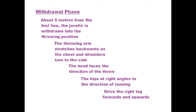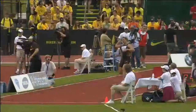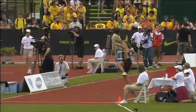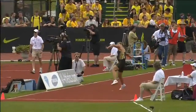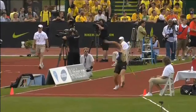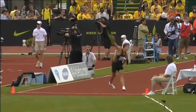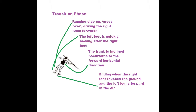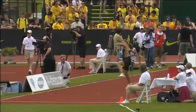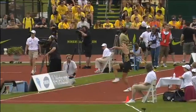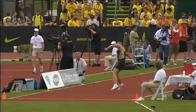Withdrawal phase: about 5 metres from the foul line, the javelin is withdrawn into the throwing position. Transition phase: running side on, crossover, driving the right knee forwards, with the left foot quickly moving after the right foot.